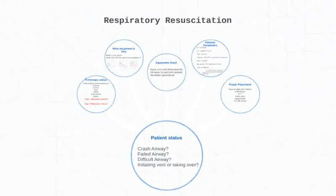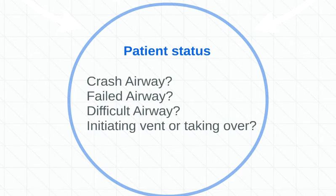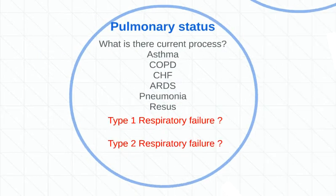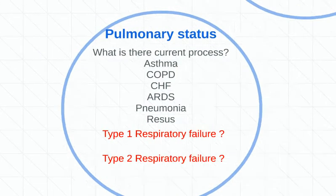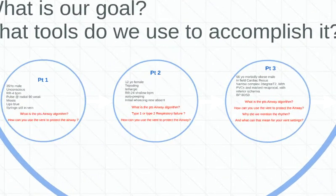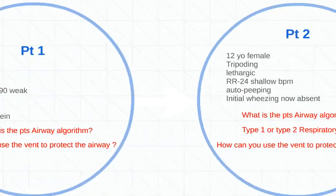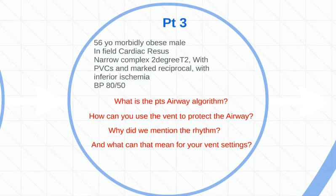We already went over what the crash airway means and the failed airway, and we're going to have that up on the website. We already went over pulmonary status and we went over some patients — we had the narc overdose, we had the asthmatic, and then we had the infield resus with that blood pressure that we're really getting nervous about when inflating their chest to a degree where it puts pressure on major vessels and dumps their blood pressure even more.